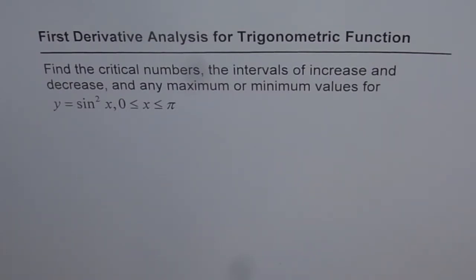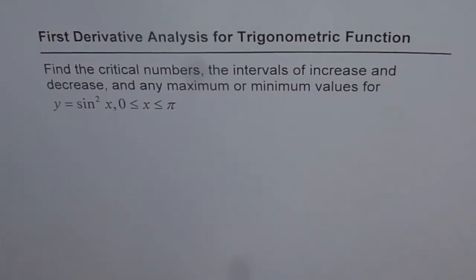To find all these things, what we need to do is find the first derivative and equate the first derivative to zero. That will give us a critical number, and then we analyze the intervals between those zeros. That is the strategy.